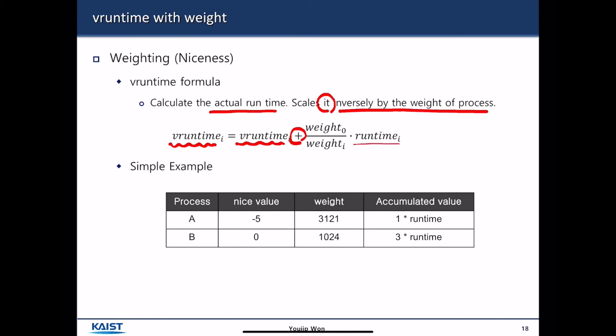For example, if Process A has nice value of minus 5, and then its weight is 3121. And then Process B has nice value 0, then weight of it is 1024. Weight of Process A is 3121. So the cumulative value corresponds to 3121 over 3121. But here, for Process B, the runtime increases 3 times faster than Process A does, because it has 3121 divided by 1024.